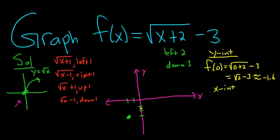To find the x-intercept, you take the entire function and set it equal to 0. So we have the square root of x plus 2 minus 3 equals 0. Now we'll add 3 to both sides, plus 3, plus 3. So we have the square root of x plus 2 equals 3.